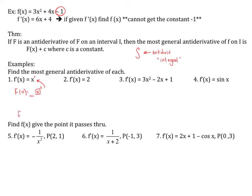If I guess x squared and take the derivative, I get 2x — that's not what I want. I need to get rid of that 2, so I multiply by one-half. So f of x is one-half x squared plus C. If you forget to put the constant, you'll get points taken off. We can't find the value of C unless we're given more information, such as a point the function passes through.